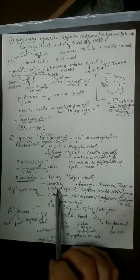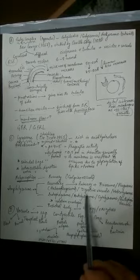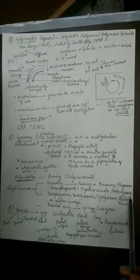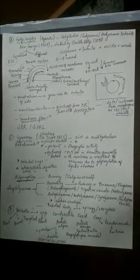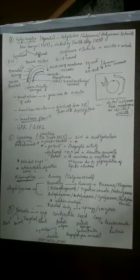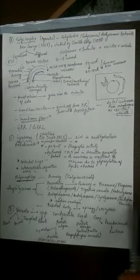Secondary lysosomes are also called heteropagosome, also called digestive vacuole, also called heterolysosome. Why heterolysosome? Because the food is coming from outside. When something comes from outside, if you remember, when nutrition is dependent on others it is called heterotrophic. Same manner, if the nutrition is coming from outside it is called heterolysosome.